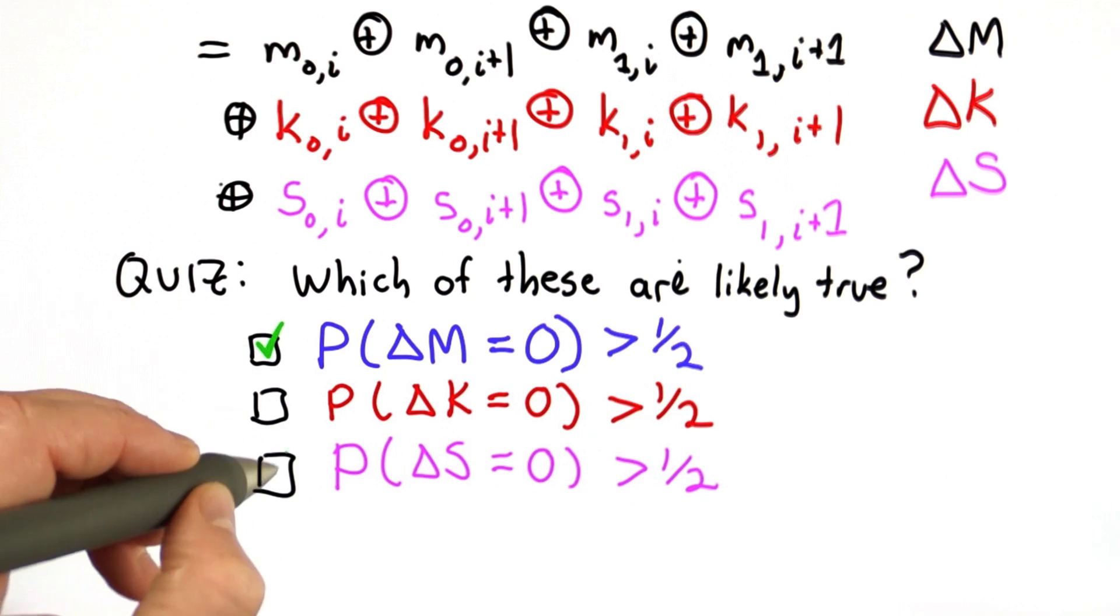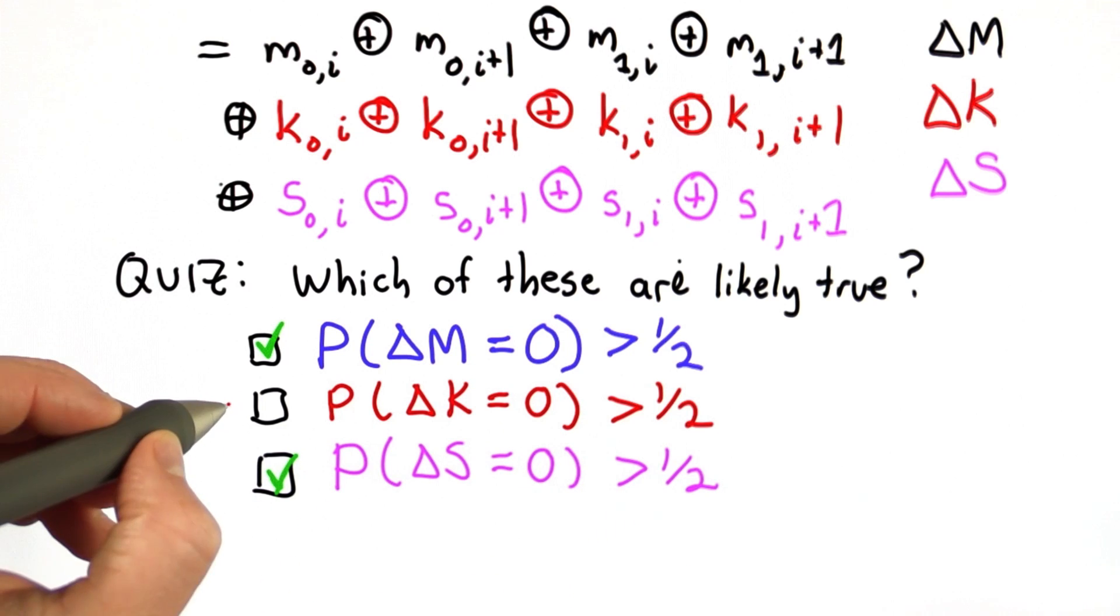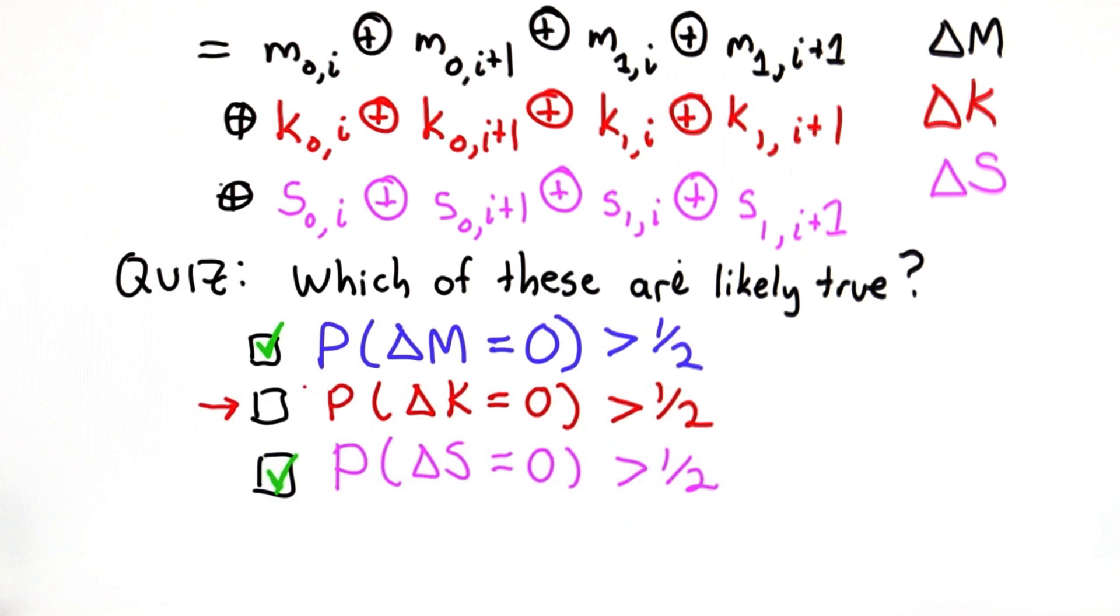So the answer is actually both the first and the third are likely to be significantly greater than 1/2. The second is not, so assuming the keys have as many 0's and 1's as the good key rotor should be designed to have, this is likely to be equal to 1/2. There's no reason to expect it to be greater than 1/2 any more likely than it would be less than 1/2.